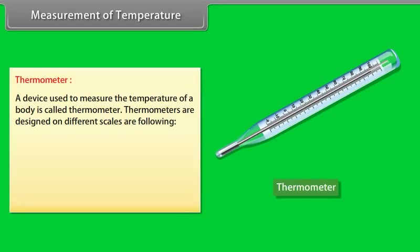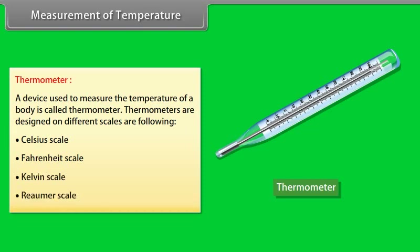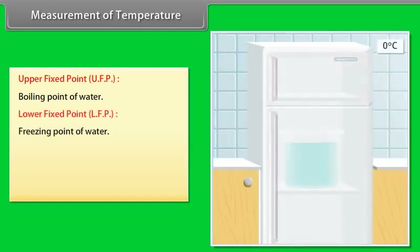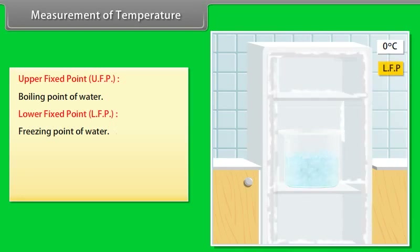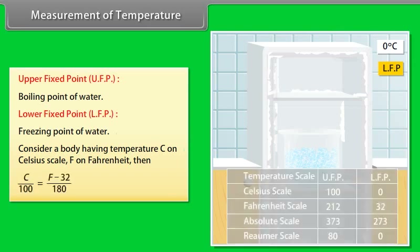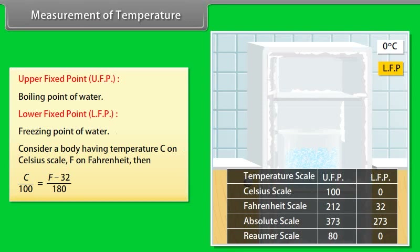Measurement of temperature: A device used to measure the temperature of a body is called a thermometer. Thermometers are designed on different scales: Celsius scale, Fahrenheit scale, Kelvin scale, and Réaumur scale. The boiling point of water is the upper fixed point; the freezing point of water is the lower fixed point. For a body with temperature C on Celsius scale and F on Fahrenheit scale: C/100 = (F − 32)/180.